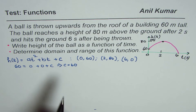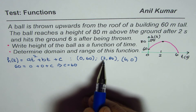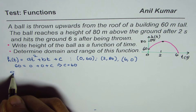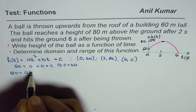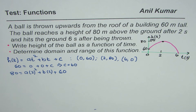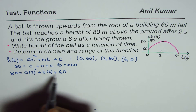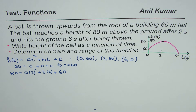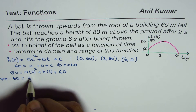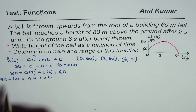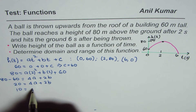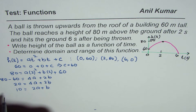Now we use the second point: t = 2, h = 80. So 80 = a(2²) + b(2) + c, and substituting c = 60 from equation 1, we get 80 − 60 = 4a + 2b, which simplifies to 20 = 4a + 2b. Dividing by 2 gives us 10 = 2a + b. Call this equation 2.